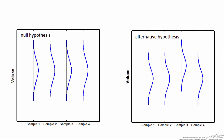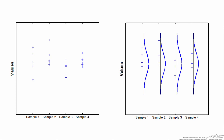There are three main things that have to be true for the analysis of variance to be accurate. First, the measurements for all four of the samples have to be approximately normally distributed. Second, the variance — or standard deviation — for all four sample populations has to be the same; the spread in the data should be approximately equal for all four samples. Third, each measurement collected must be independent of one another. When I collected one measurement, it cannot influence the values of other measurements for either sample one or any of the other samples.